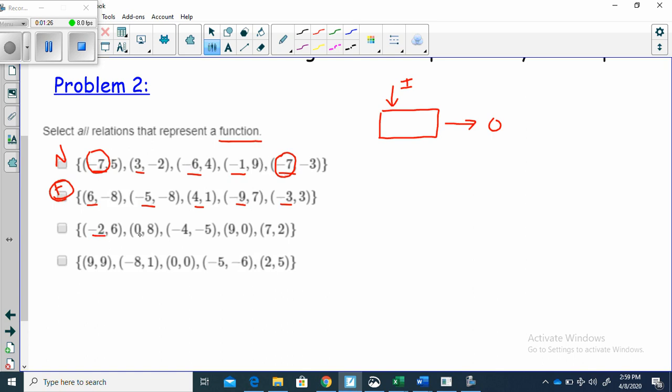Okay, look at this one. We've got negative 2, 0, negative 4, 9, and 7. These inputs do not repeat. Therefore, this is a function.